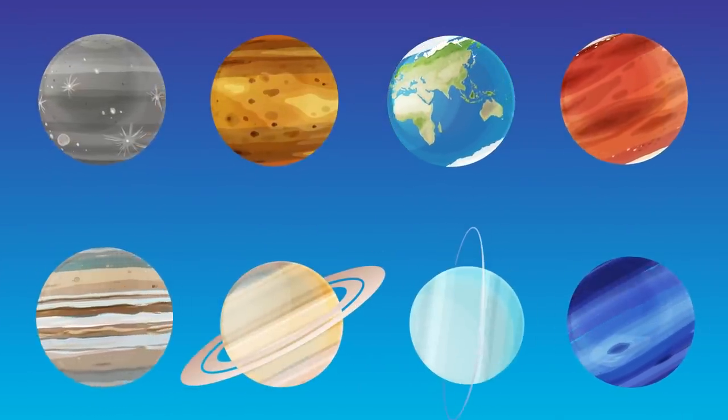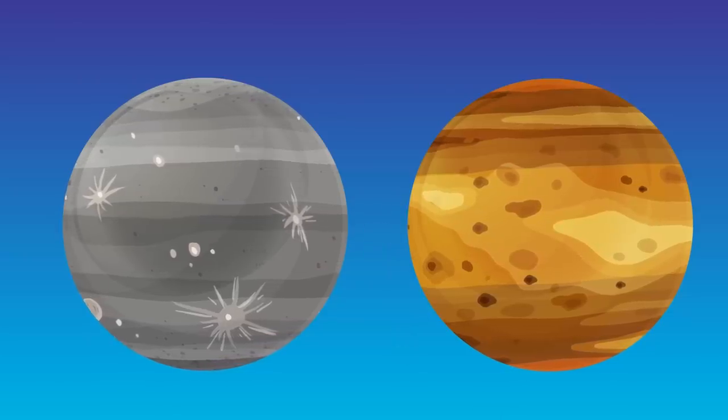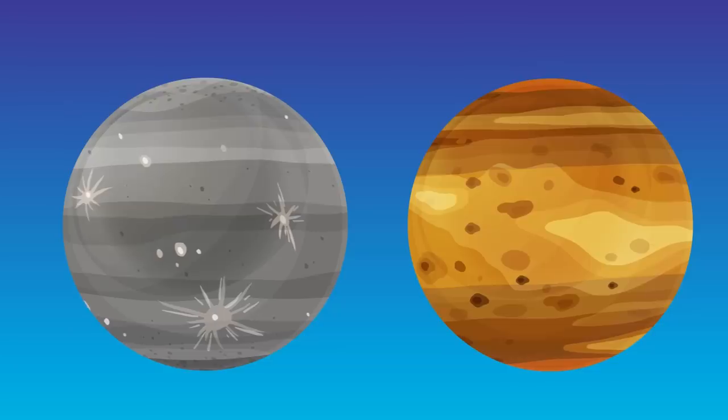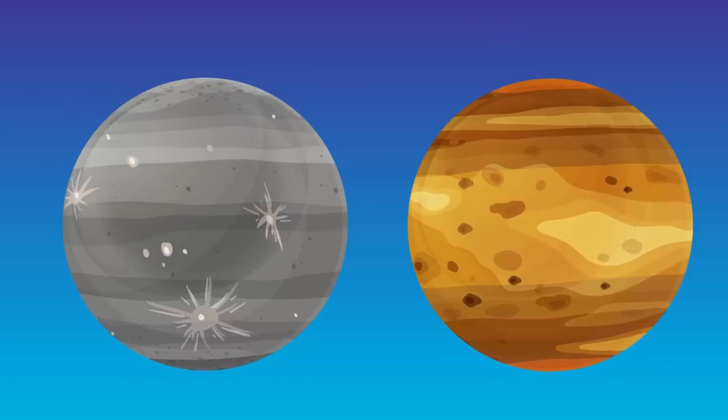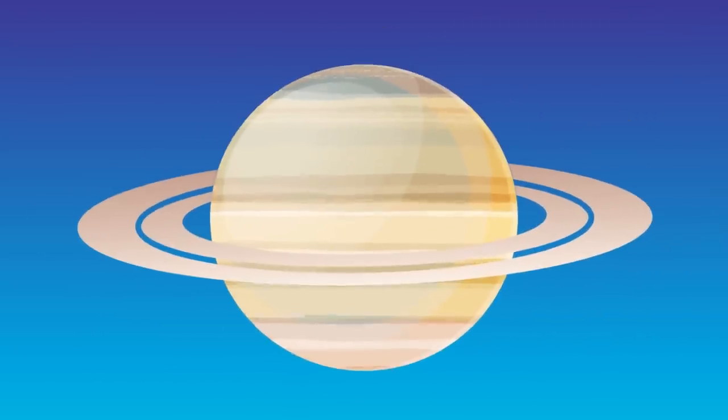But some are rounder than others. For instance, Mercury and Venus are both almost perfectly round, like floating marbles. Saturn is a bit thicker around the middle, making it the least round planet in our solar system. Why that extra thickness?